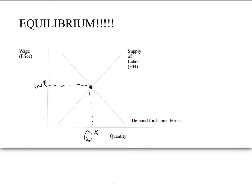Remember that the supply of labor is really MRC, and the demand for labor is really VMP, or MRP. So really what we're saying is you hire workers and you find equilibrium when MRC is equal to VMP, where there is no surplus and no shortage in the market.